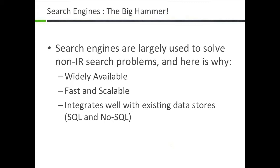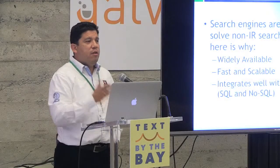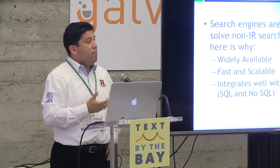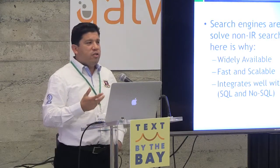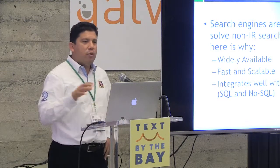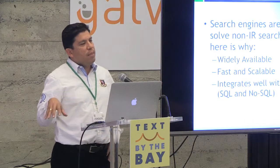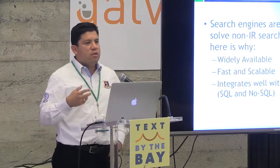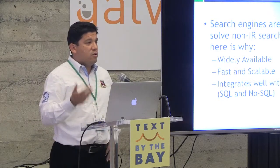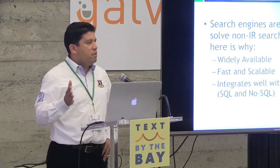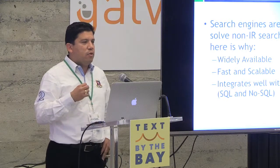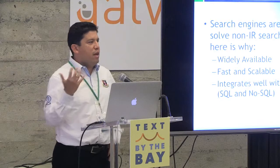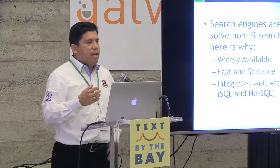Every single one of these problems has ultimately been tried or solved to some extent with something like a search engine. Why are search engines so powerful for attacking most of these problems? Even when data is in traditional or NoSQL databases, we often use Elasticsearch or Solr to perform these tasks. First, they're widely available and open source. They're fast and scalable — distributed systems that can shard indexes at mass scale. They integrate well: you can pull data from different repositories and represent it generically in JSON, with documents and fields, and it's easy to use.